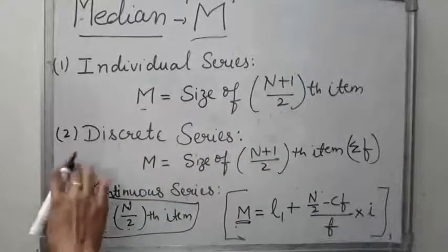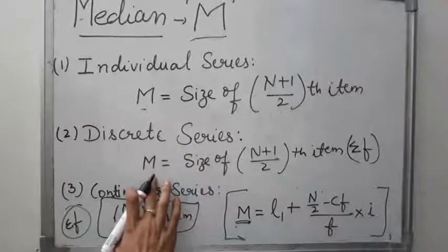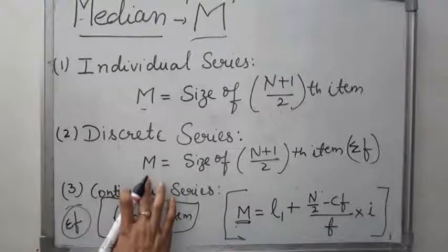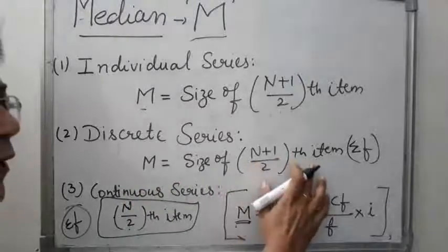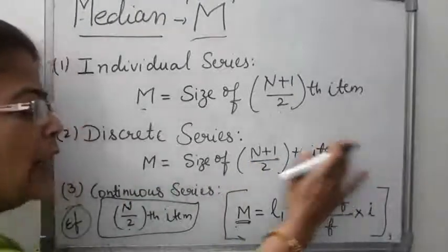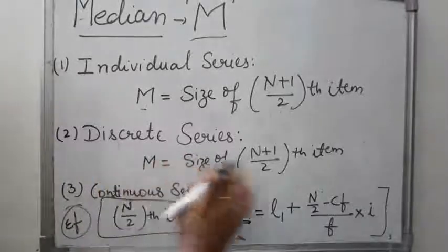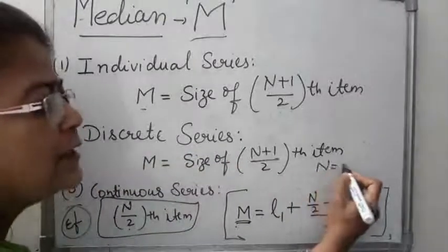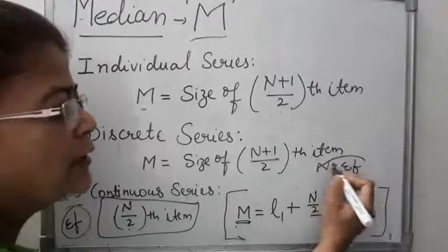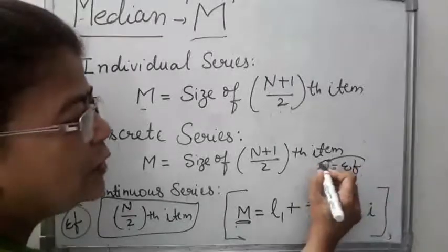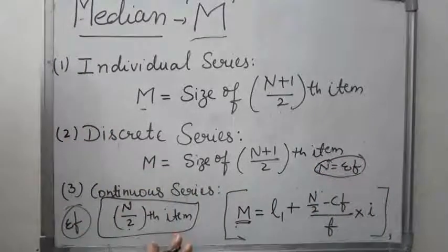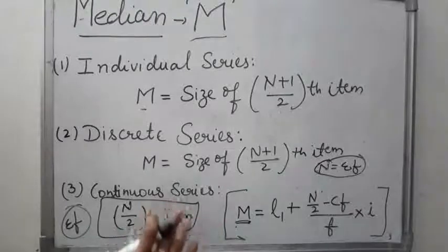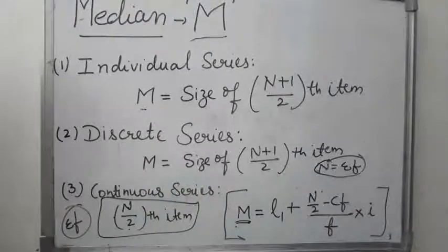Next is the discrete series. In the discrete series, frequencies are given. We use the same formula: size of (N + 1) / 2 th item. One important thing to remember here is that N is the summation of frequency (Σf). First, we arrange the data in ascending or descending order, then we convert the simple frequency into cumulative frequency.